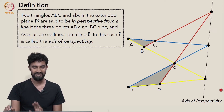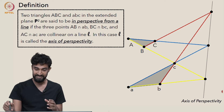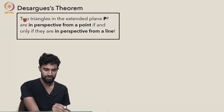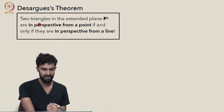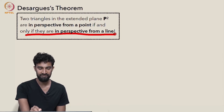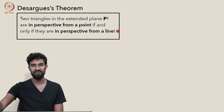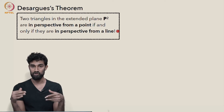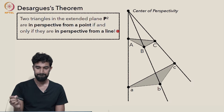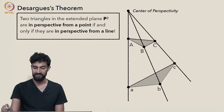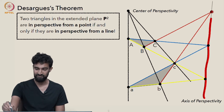That's the second definition needed to state Desargues' theorem. The theorem says: two triangles in the extended plane are in perspective from a point if and only if they're in perspective from a line. In other words, these two statements about triangles are equivalent.